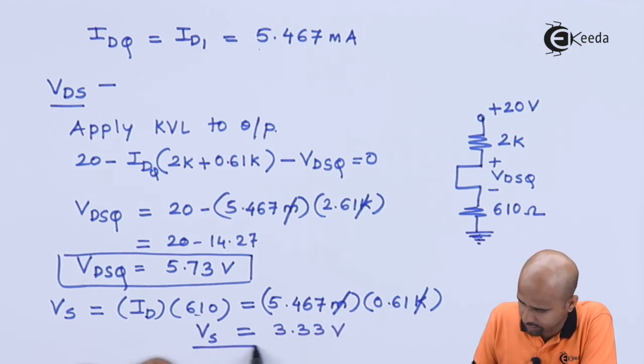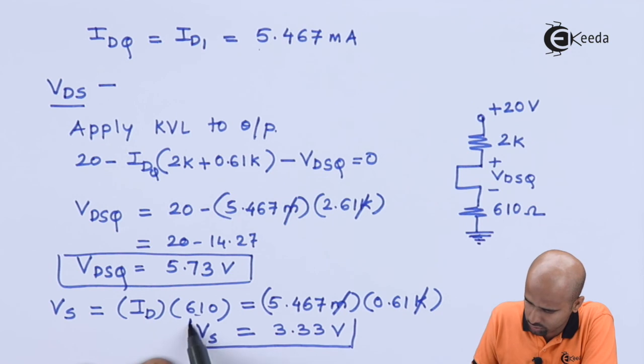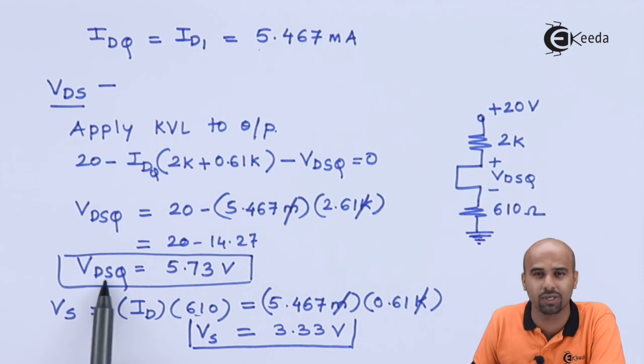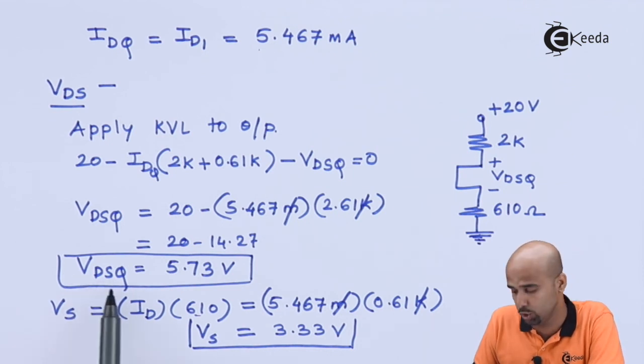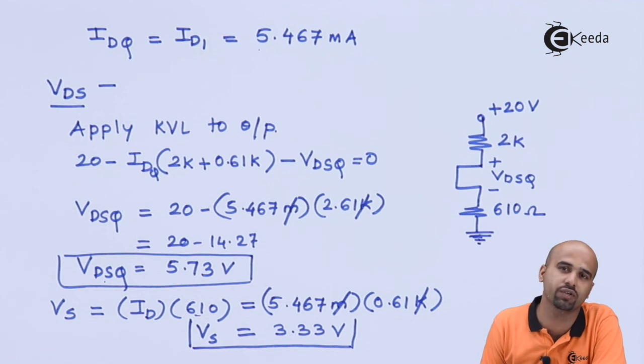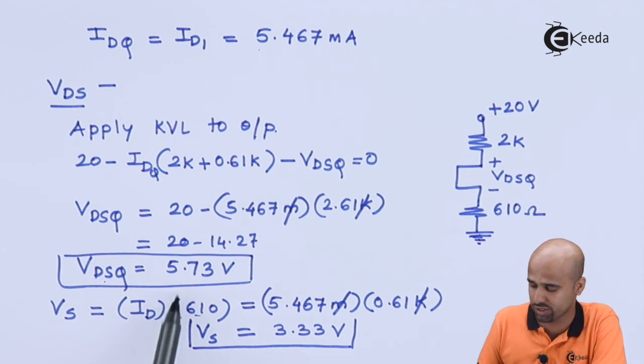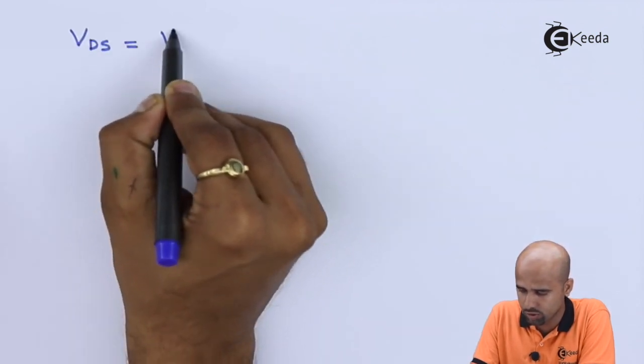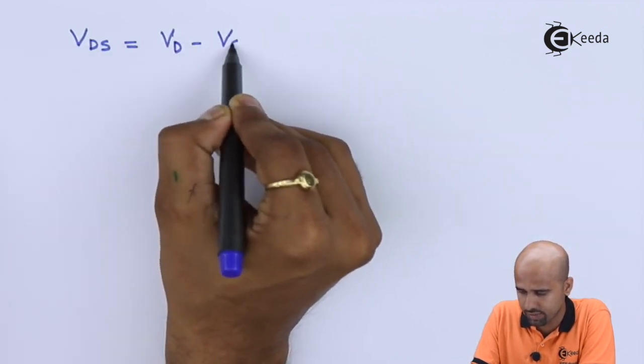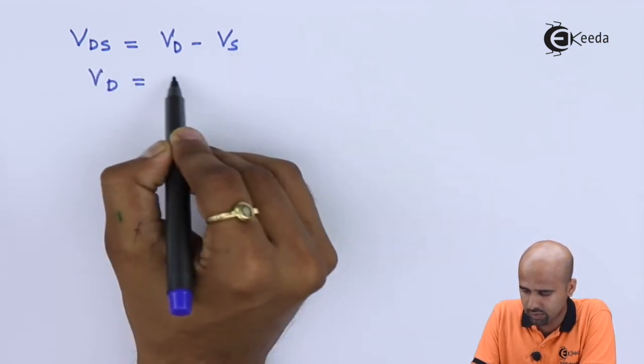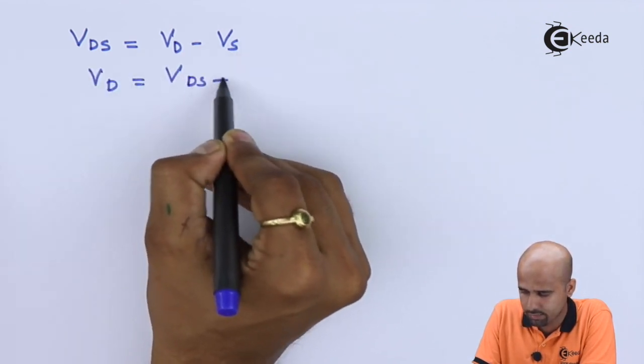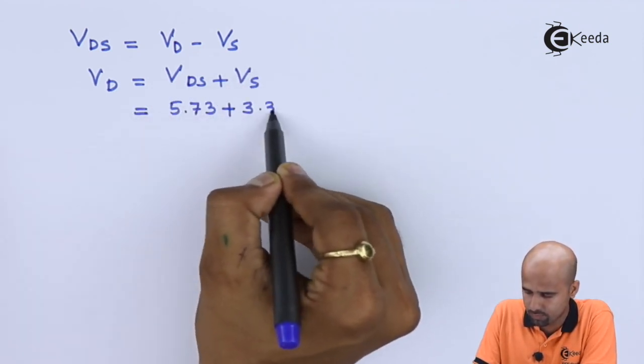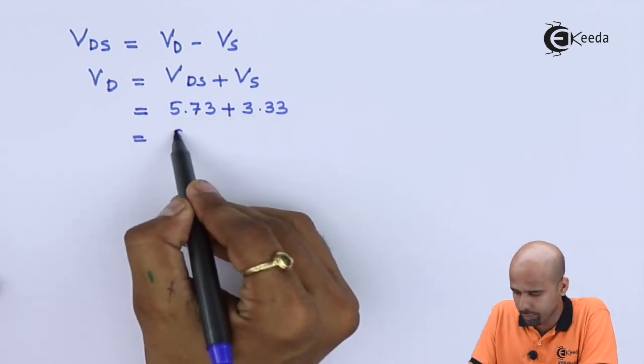Now, apply your logic. Apply your brain. VDS is nothing but VD - VS. We know the value of VDS. We know the value of VS. Can we find out the value of VD as it is by using these two equations? Yes. As I said, VDS = VD - VS. So, we can say that VD = VDS + VS. Add these two. It will become 9.06.